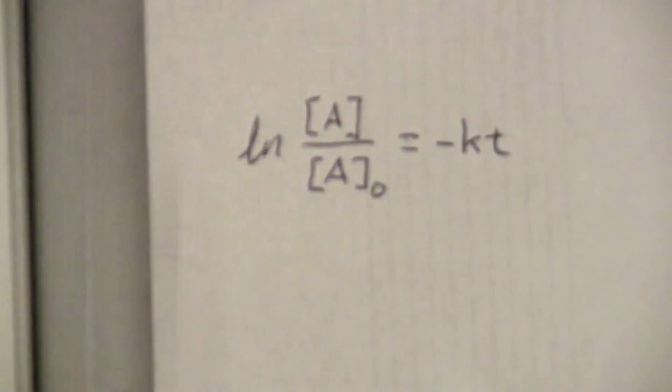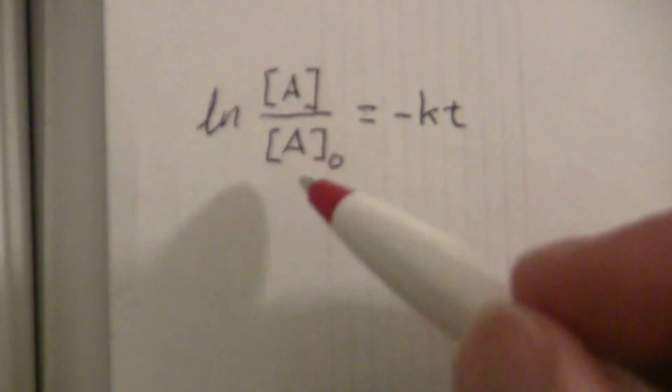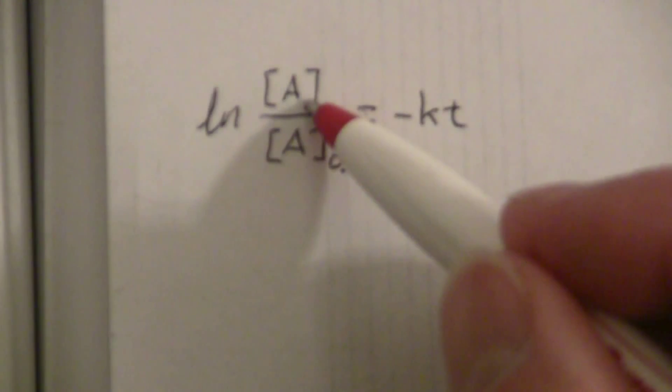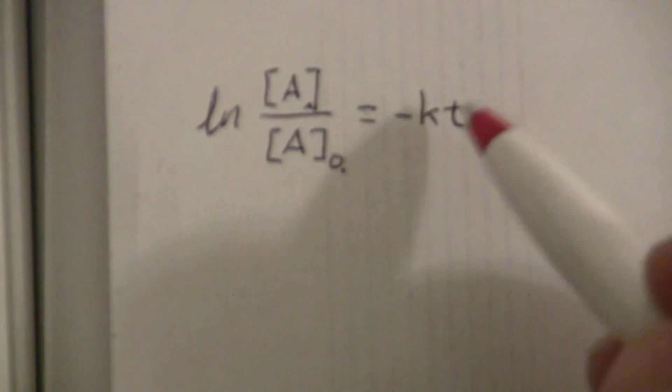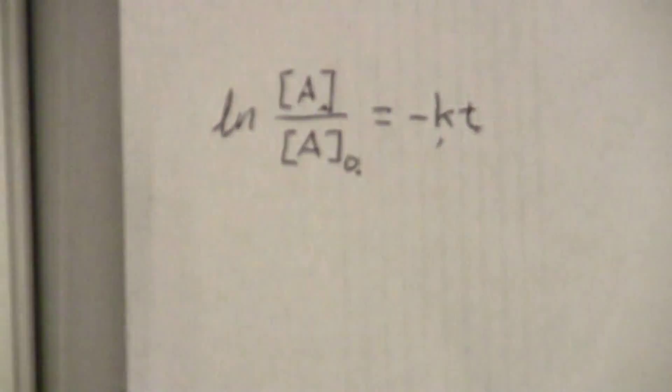This is an equation that would be given to you on a test, but this relates the initial and the current concentrations to time given the rate constant. And that's the key.